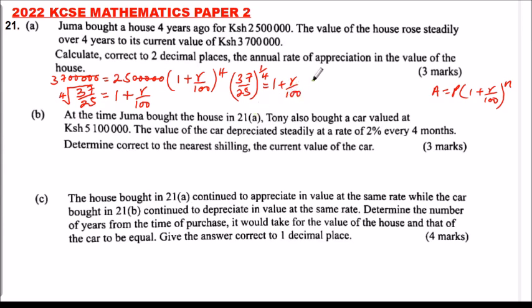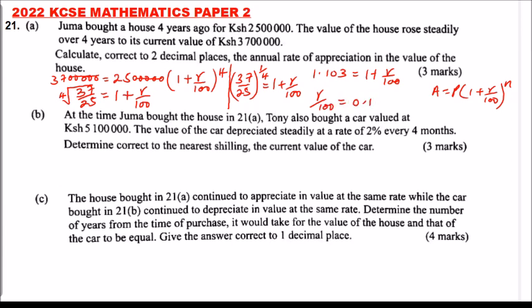So you subtract 1 from both sides: r over 100 is equal to 0.10297, which we round to 0.103.